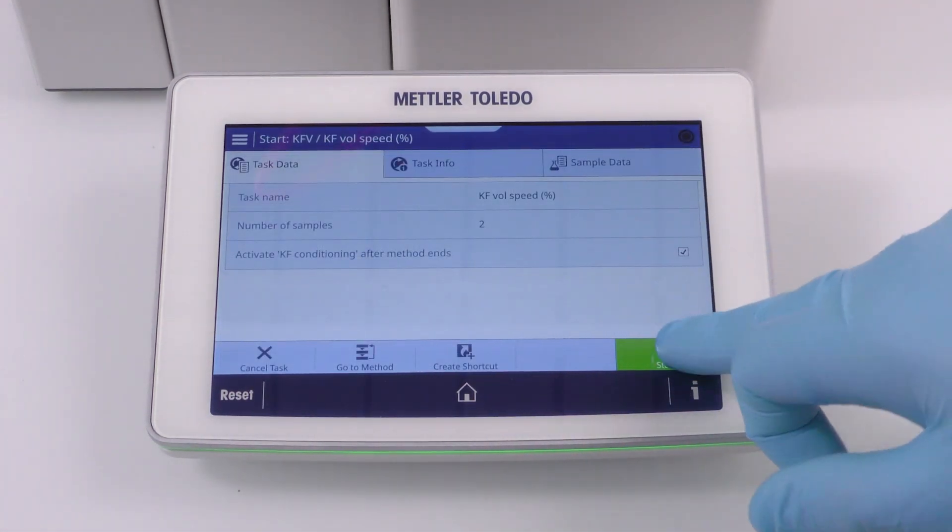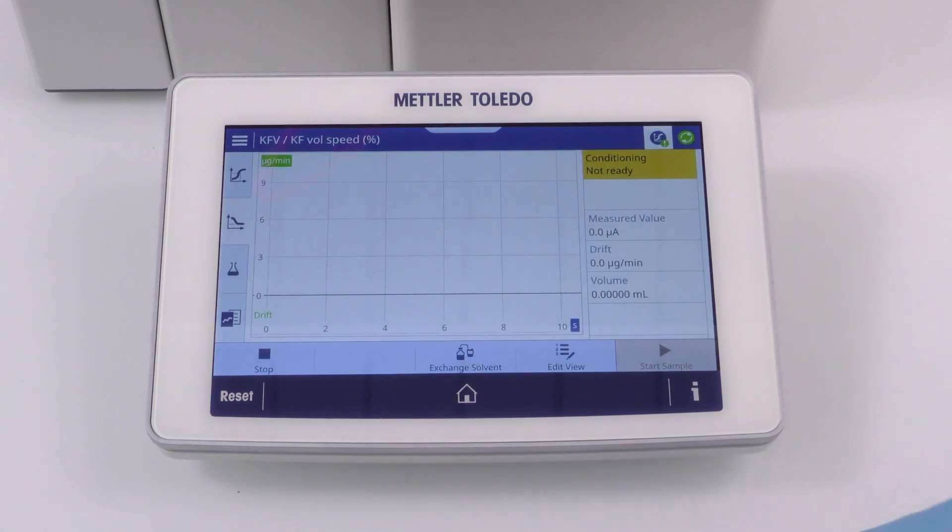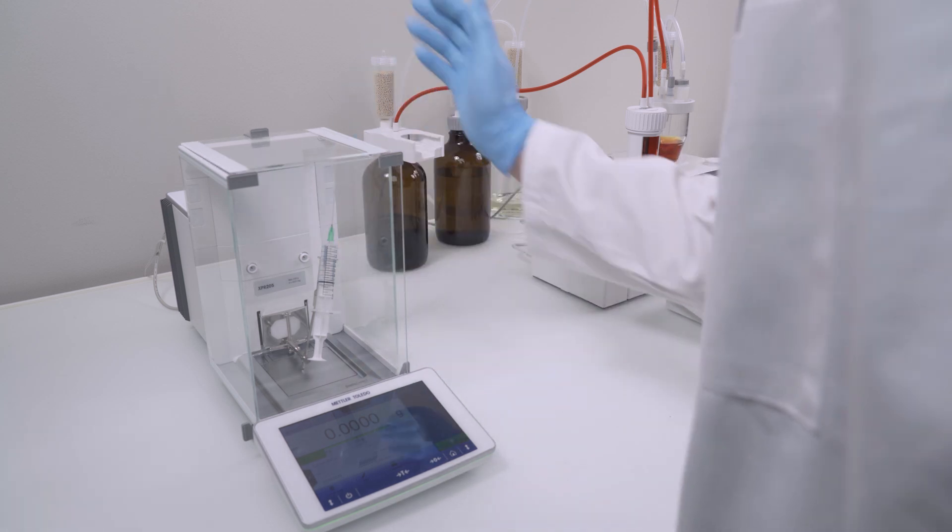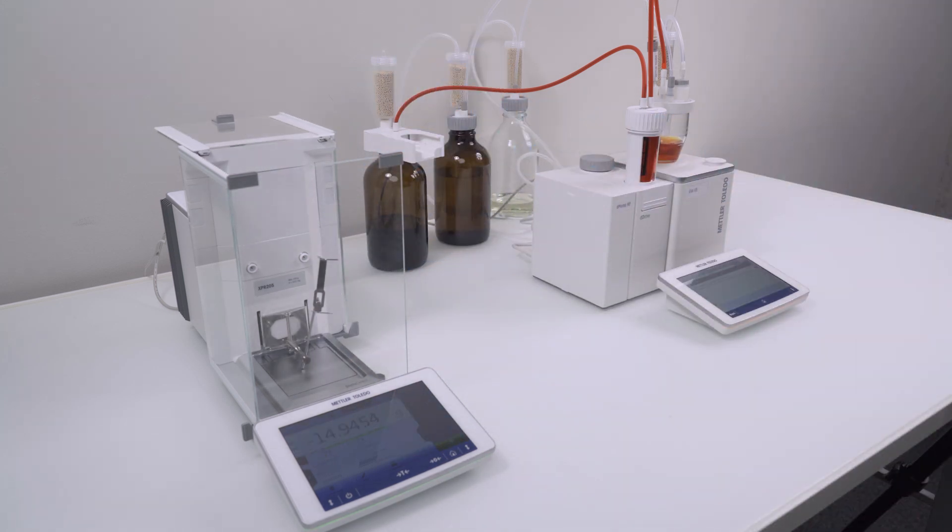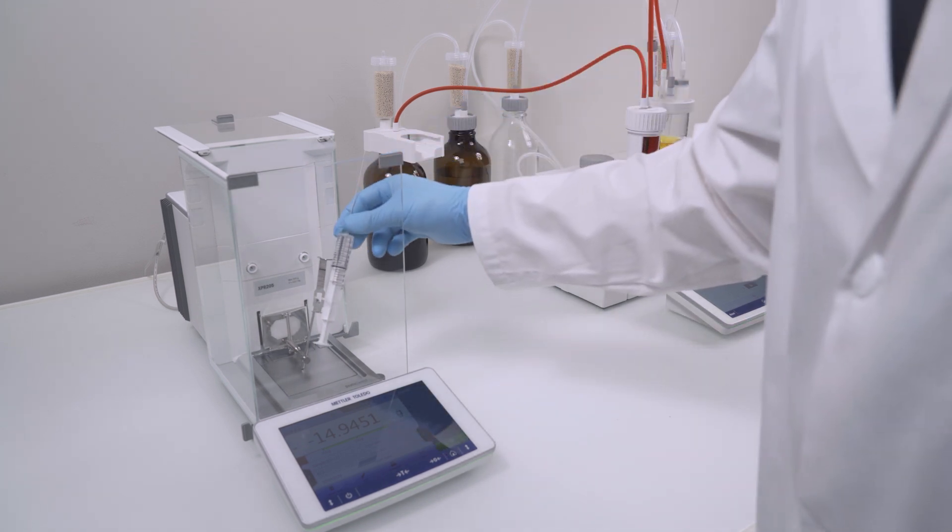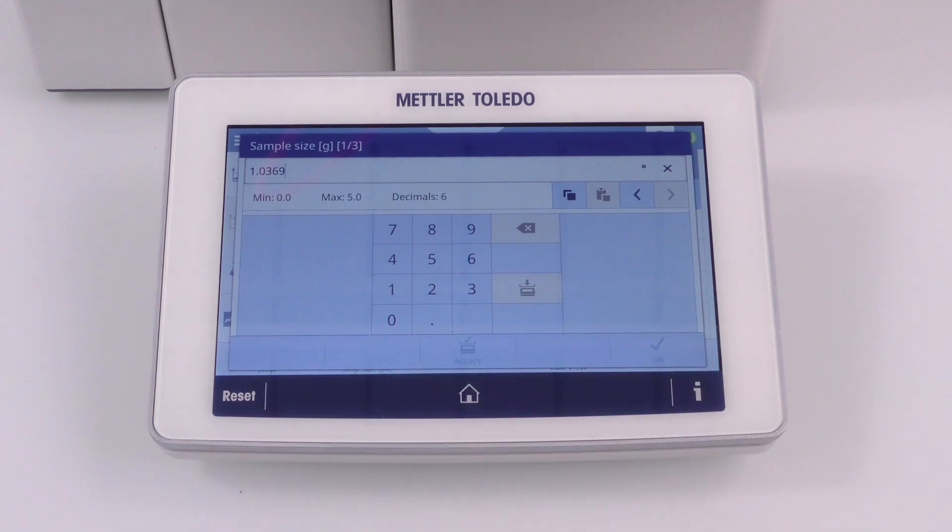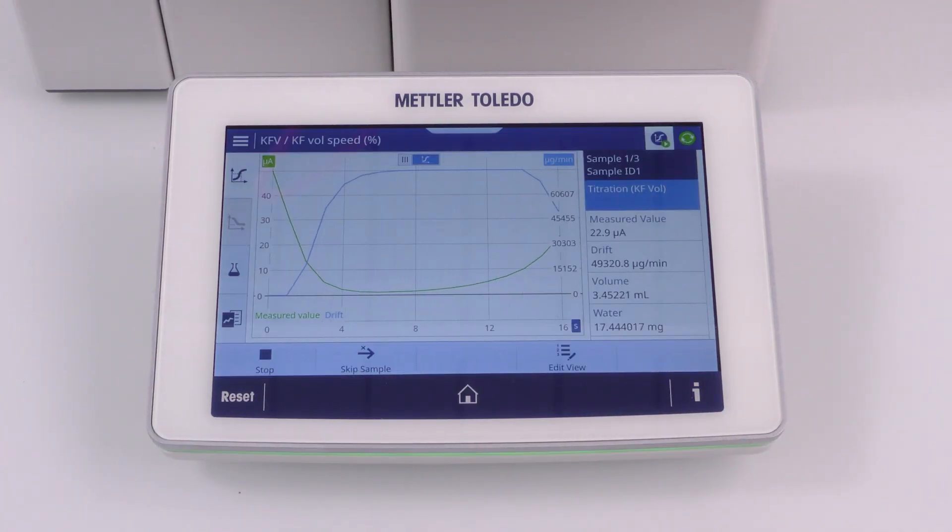Start the task to measure the industrial alcohol sample from the shortcut and as soon as the cell is conditioned and ready, add the sample from the pre-tared syringe. Enter the weight and wait for the sample to be finished to run with the next one.